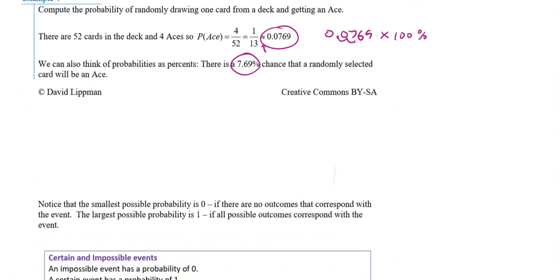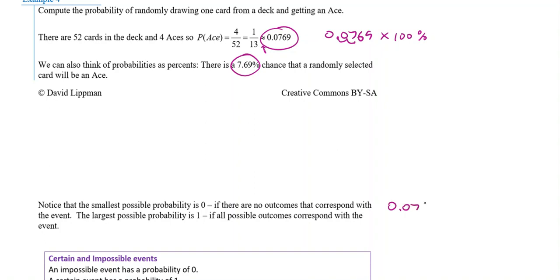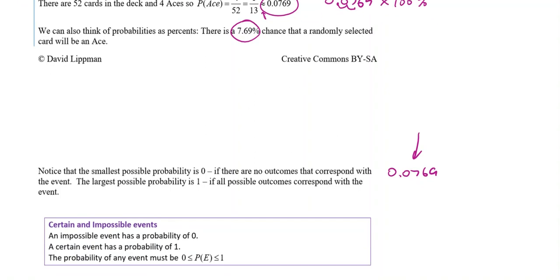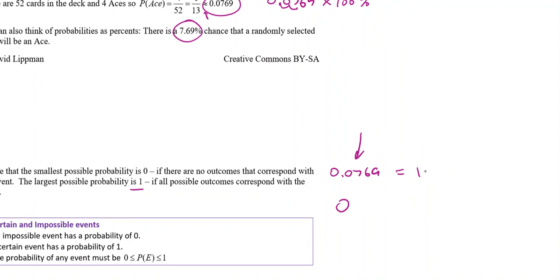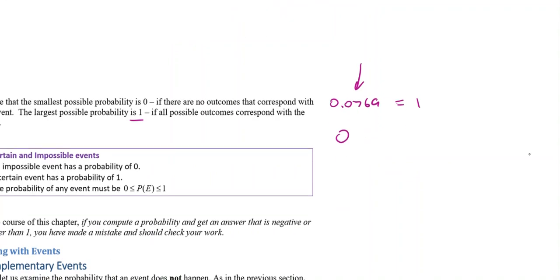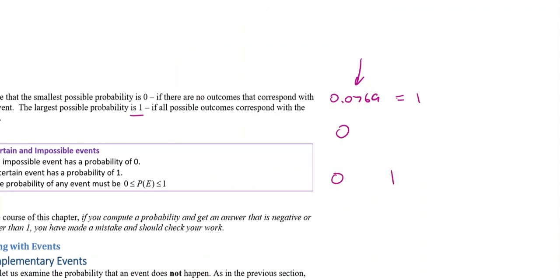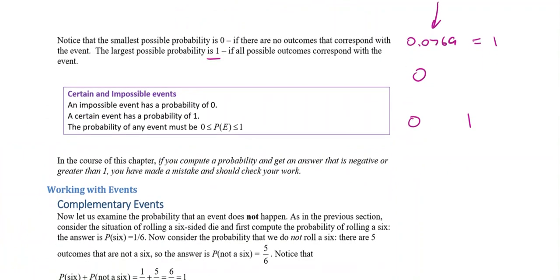Notice that the smallest possible probability is zero — a decimal of zero means there's a 0% chance it happens. The largest possible probability is one — a decimal of one means a 100% chance. These are called certain and impossible events: an impossible event has probability zero, a certain event has probability one. Any probability must be between zero and one.